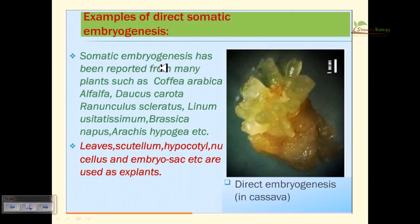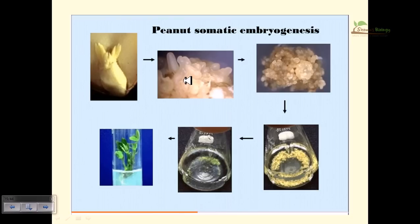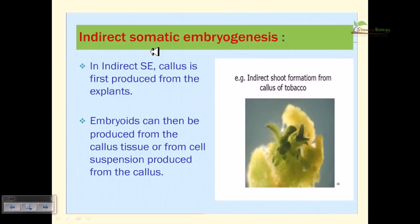Direct somatic embryogenesis has been reported in many plants such as Coffea arabica, alfalfa, and Daucus carota. Leaves, hypocotyls, nucellus, and embryonic sac can be used as explants. For example, in peanut somatic embryogenesis, the embryo is collected and placed in media where cells divide and grow. Since these cells are destined to produce embryos, they form embryos directly, which are then transferred to culture media supporting growth and maturation, finally producing trees.